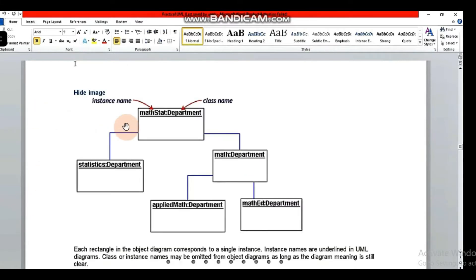Now you can see this diagram. Here we have math stat - this is an object diagram with the class name. We have a colon which indicates that the first thing is the instance name, and after that, the class name. There are branches and multiple departments in one department, that is statistics.